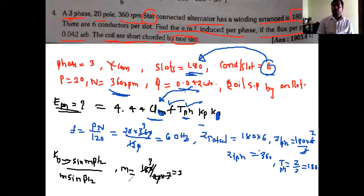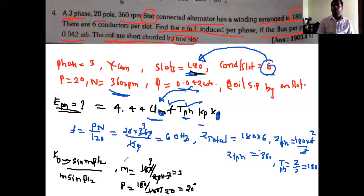To find kd: m equals slots divided by poles times phases equals 180 divided by 20 divided by 3, which equals 3. So m equals 3. Beta equals 180 divided by slots per pole: slots per pole equals 180 divided by 20 equals 9, so beta equals 180 divided by 9 equals 20 degrees.